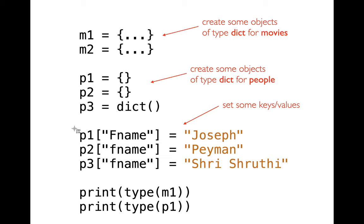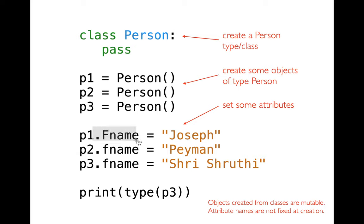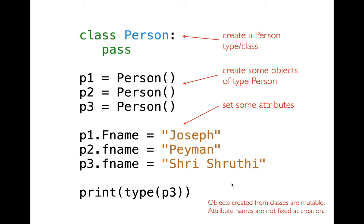It's going to be a lot like a dictionary, but a little bit more elegant. Instead of the bracket-quote-key-quote-bracket syntax, we'll say something like `b1.fname = 'Joseph'`. You can see it's a lot like having keys and values, but the vocabulary is different. On the left, `fname` — instead of being a key — I'm going to call that an attribute name. And on the right, instead of those being values like in a dictionary, these are going to be attribute values. Attributes are the same concept as keys and values, just different vocabulary.